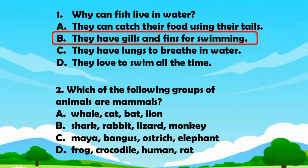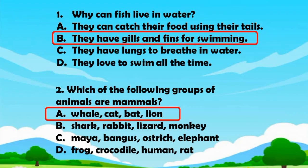Question number two. Which of the following groups of animals are mammals? A. Whale, cat, bat, lion. B. Shark, rabbit, lizard, monkey. C. Maya, bangus, ostrich, elephant. D. Frog, crocodile, human, rat. The answer is Letter A. Whale, cat, bat, lion.